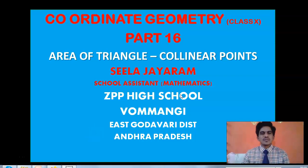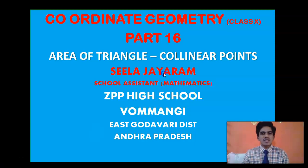Good morning students. Welcome to the fourteenth part of this chapter, Coordinated Geometry. In the previous lessons, we discussed the formula for area of a triangle when the three vertices are given, and we applied this formula to calculate the area of a triangle and the area of a quadrilateral. Now in this class, we will interrelate the area of a triangle with the concept of collinear points. I will show you some images.